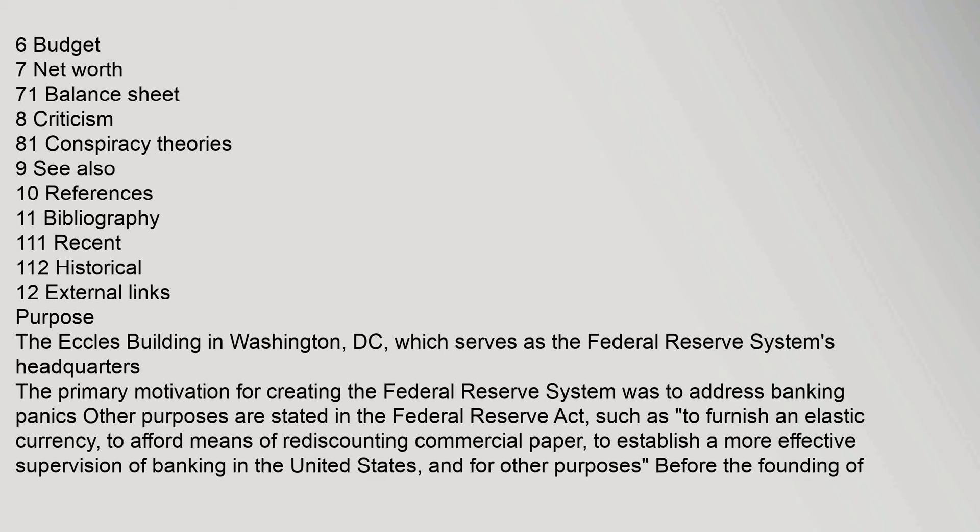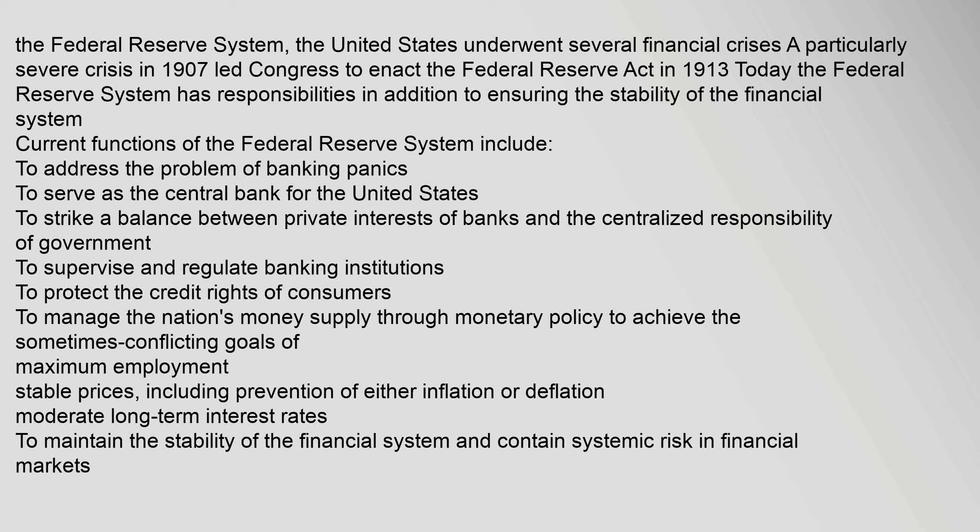The Eccles Building in Washington, D.C., serves as the Federal Reserve System's headquarters. The primary motivation for creating the Federal Reserve System was to address banking panics. Other purposes are stated in the Federal Reserve Act, such as to furnish an elastic currency, to afford means of rediscounting commercial paper, and to establish a more effective supervision of banking in the United States. Before the founding of the Federal Reserve System, the United States underwent several financial crises. A particularly severe crisis in 1907 led Congress to enact the Federal Reserve Act in 1913.